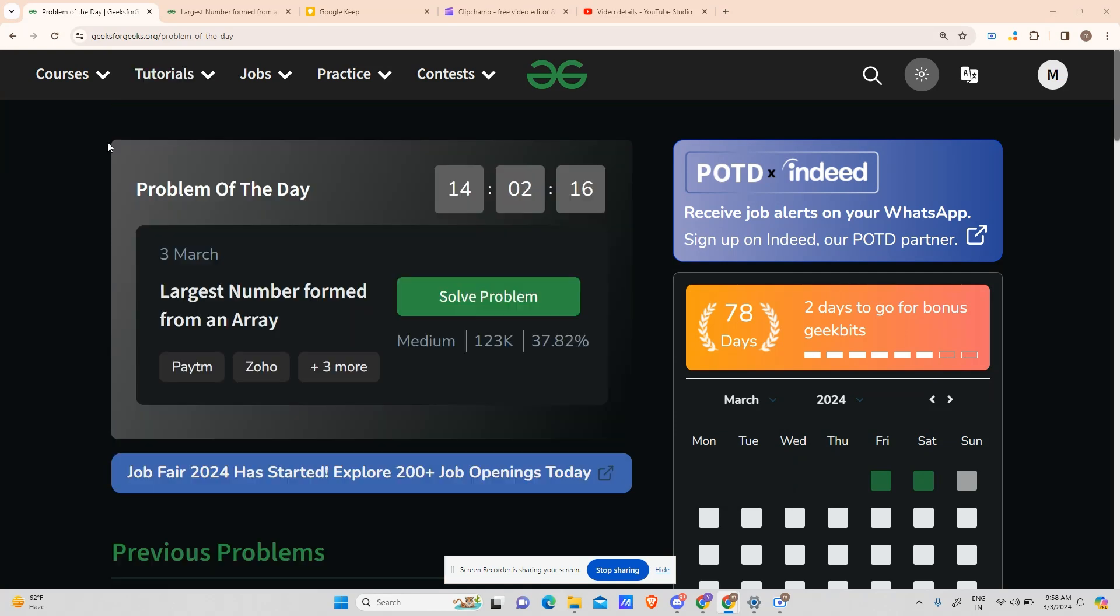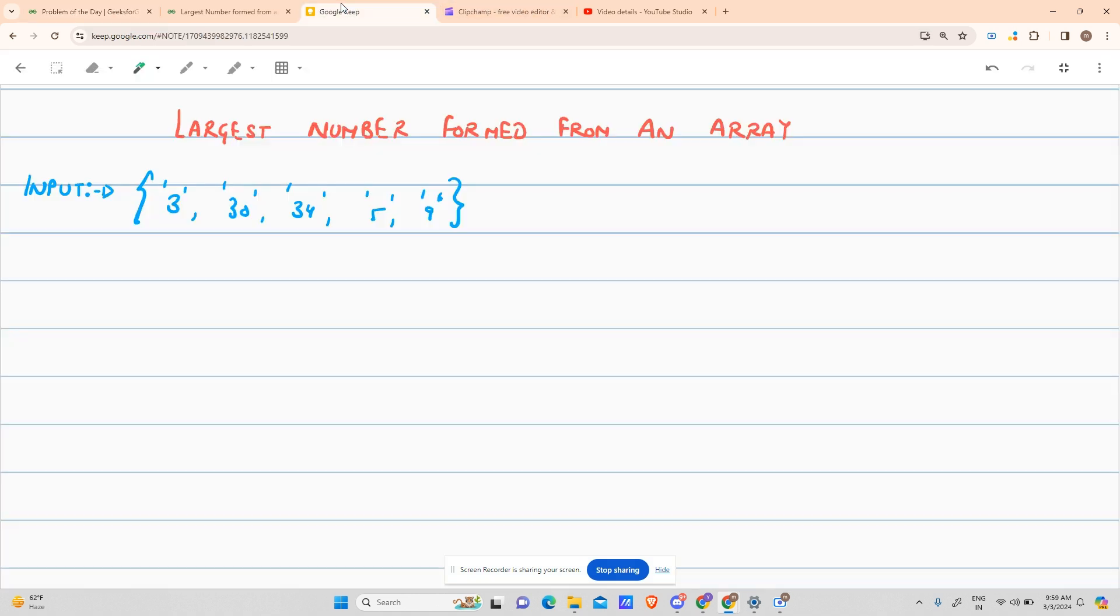Hey guys, welcome back to my channel. Hope you are doing extremely well. This is your very own MassCorders Inside, and today we will be solving another problem for the POTD: Largest Number Formed from an Array. Let's see what the problem says.